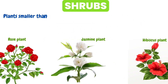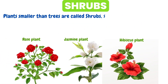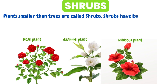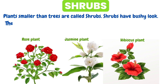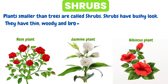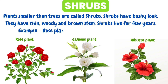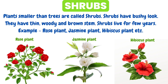Shrubs: Plants smaller than trees are called shrubs. Shrubs have a bushy look. They have thin, woody and brown stem. Shrubs live for few years. Examples: rose plant, jasmine plant, hibiscus plant, etc.